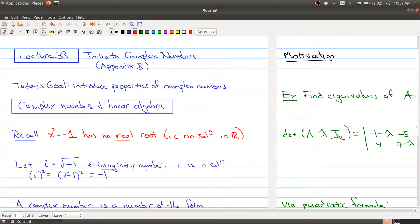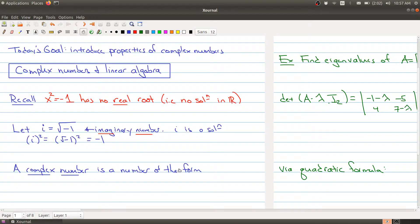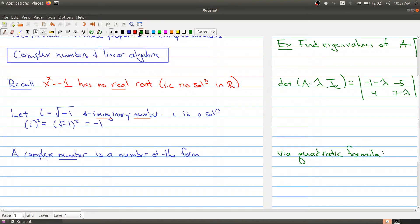A complex number is any number of the form a plus bi, with a and b being real numbers.